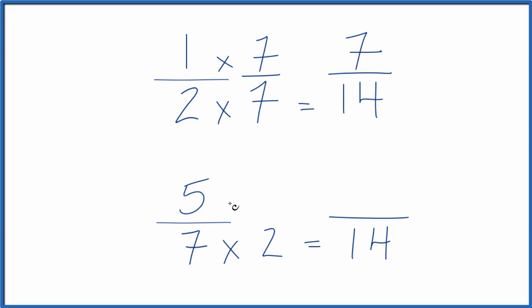Down here, let's multiply 5 by 2 as well, just like we did the denominator. 5 times 2 is 10.